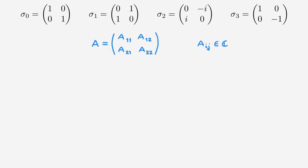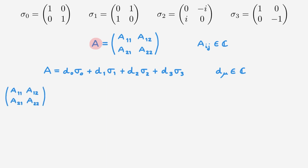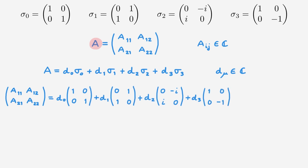In the most general case, these matrix elements will be complex numbers. We're going to show that we can write any 2x2 matrix A in a unique manner in terms of the identity matrix and the Pauli matrices. Specifically, we will show that we can write A as a linear combination of these four matrices, where the expansion coefficients d_mu are in general complex numbers. Using the explicit form of the matrices, we get A equal to d0 times the identity matrix, plus d1 times sigma 1, plus d2 times sigma 2, plus d3 times sigma 3.